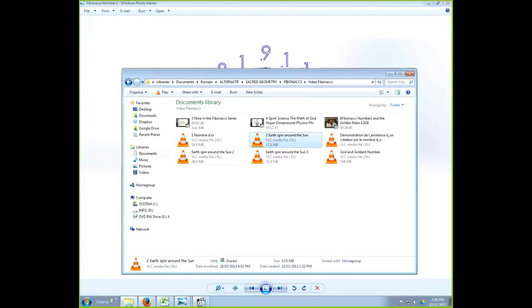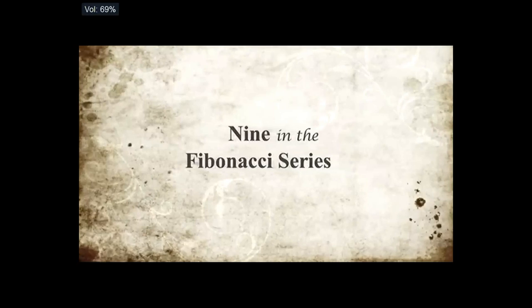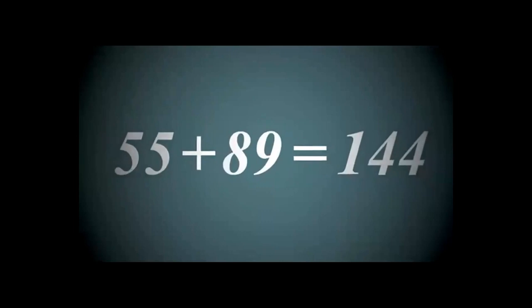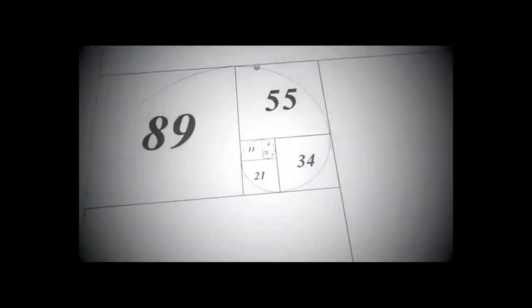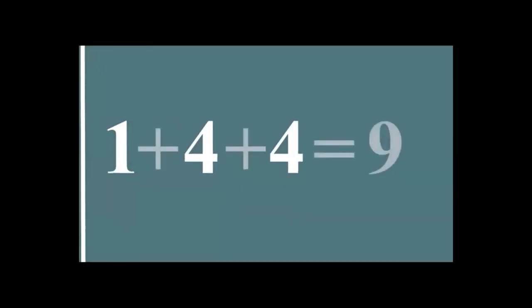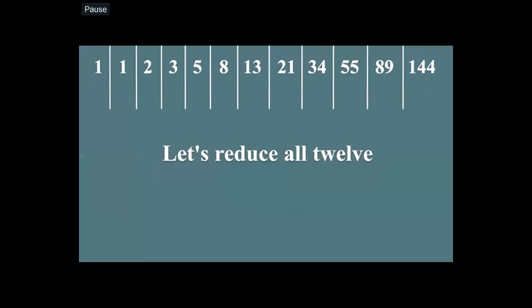The host now demonstrates the real identity of the Fibonacci sequence by reducing each number to a single digit. The sequence 1, 1, 2, 3, 5, 8 continues: 13 reduces to 4, 21 reduces to 3, 34 reduces to 7, 55 reduces to 10 which is 1, 89 reduces to 8, and 144 reduces to 9.